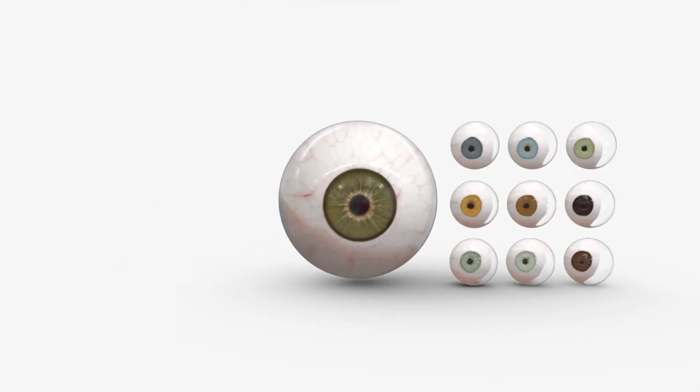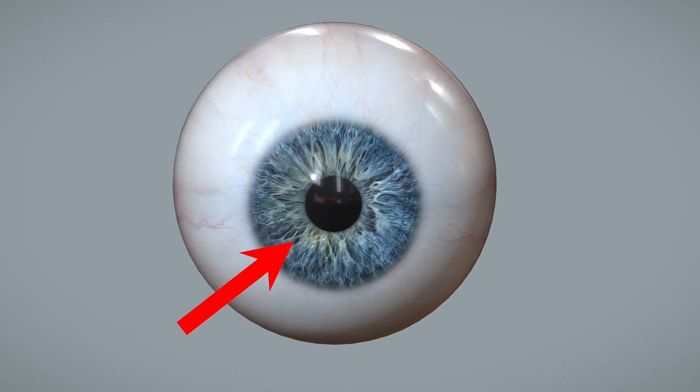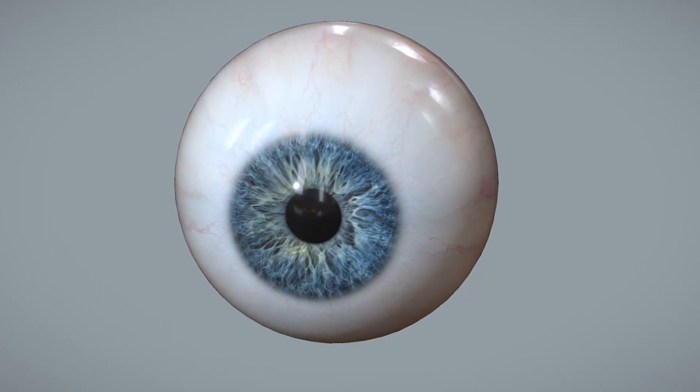After passing through the cornea, light passes through the pupil. The pupil is present in the middle of the eye. The iris surrounding the pupil controls the amount of light entering the eye.